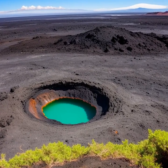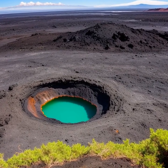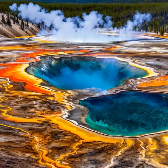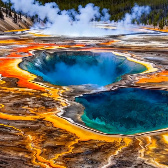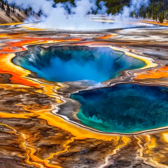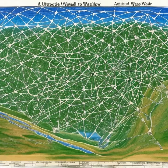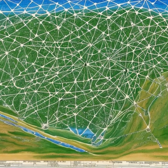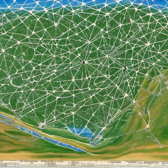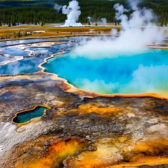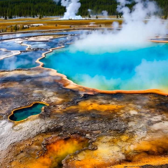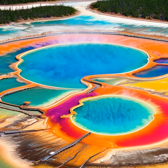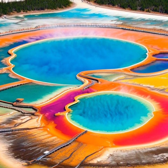Let's dive into the fascinating geological processes that led to the formation of the Grand Prismatic Spring. To do that, we need to first understand the hydrothermal system and unique features of Yellowstone National Park. Yellowstone sits on top of a volcanic hot spot, which is an area of intense heat that originates from deep within the Earth's mantle.